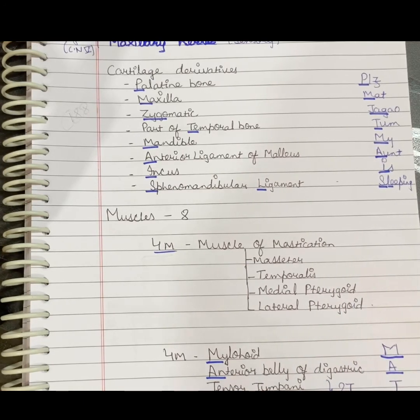And the other 4M can be remembered as MAT: mylohyoid, anterior belly of digastric, tensor tympani, and tensor palatini.